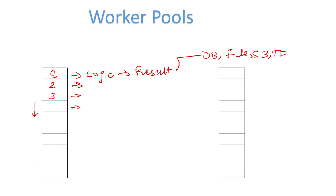But what if we don't know how many tasks we're going to handle, or maybe the list is so long that going in a serial manner will take a lot of time? To solve this problem we use the worker pool strategy.